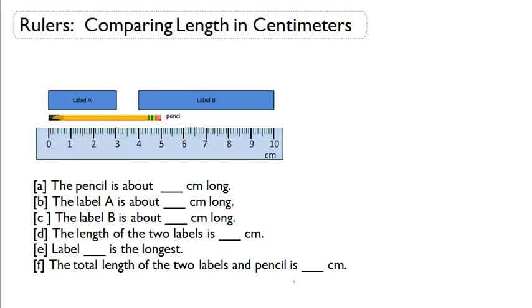Rulers comparing length and centimeters. They give us A, B, C, D, E, and F to answer. Let's look at the picture they give us. This is a ruler. Again, the units are centimeters.